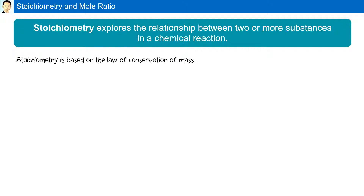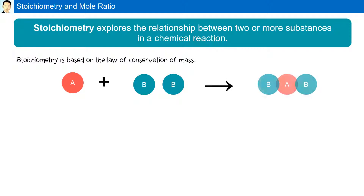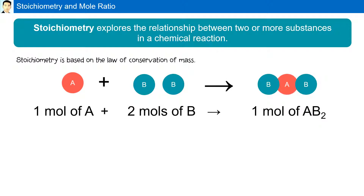For example, we have one mole of A reacting with two moles of B to produce one mole of AB2. This is a balanced chemical equation — one mole of A and two moles of B reacting to produce one mole of AB2.